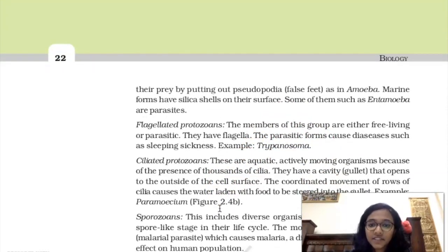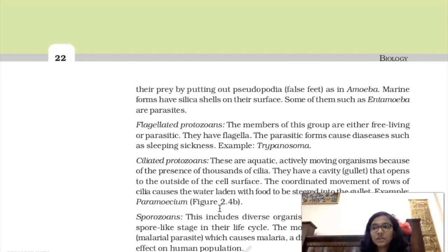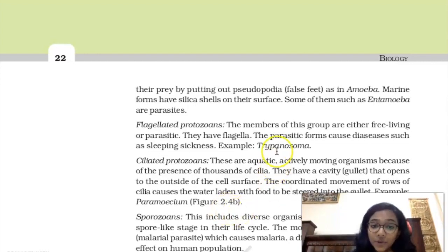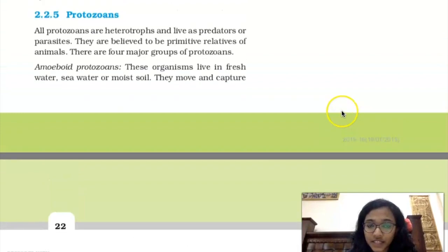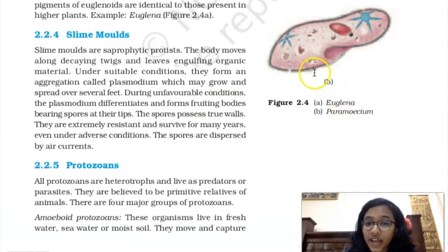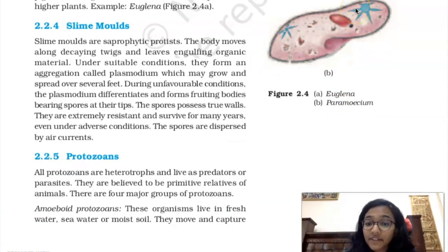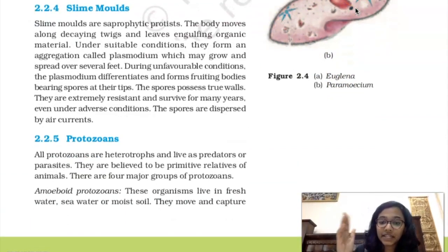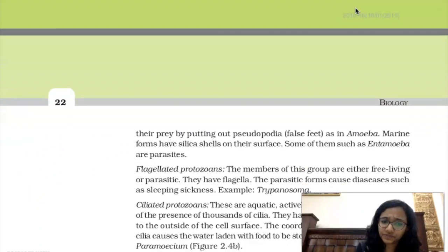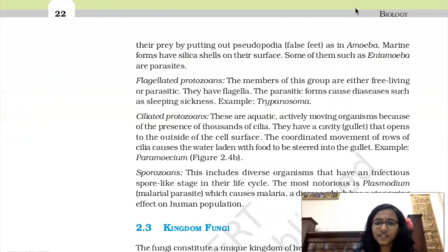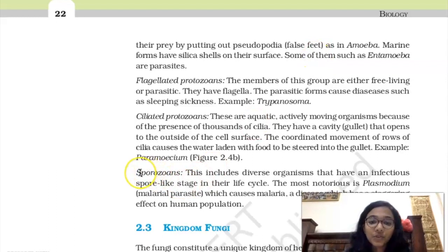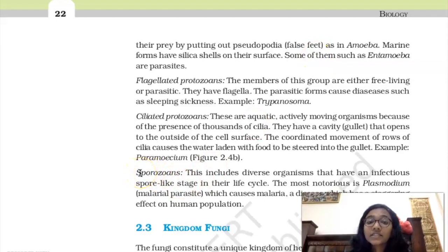Ciliated protozoans use cilia — structures similar to flagella but different — for movement, just as cilia are found in the human trachea and fallopian tubes. The example is Paramecium, which has many cilia and a gullet. The cilia push food from outside into the gullet for digestion.